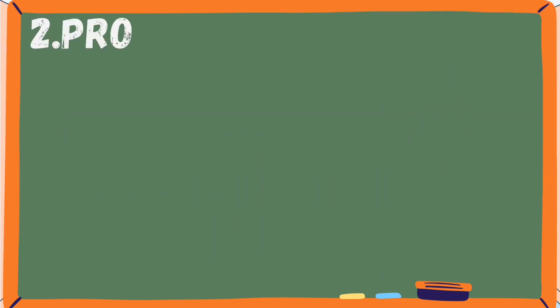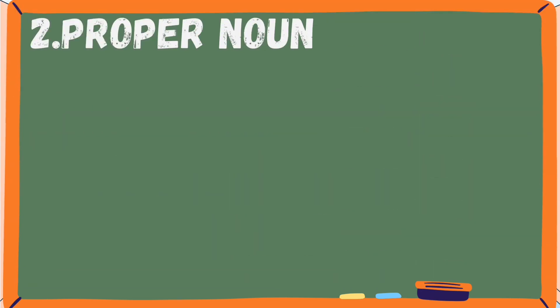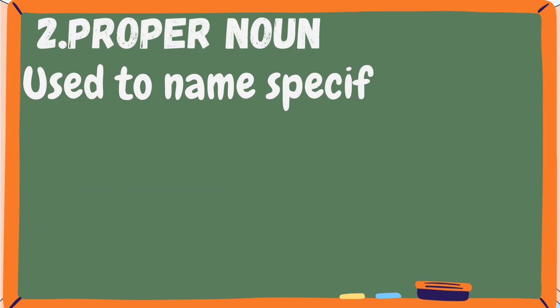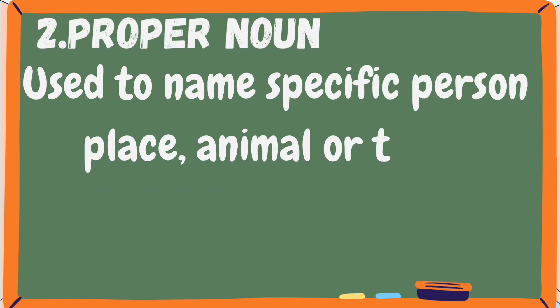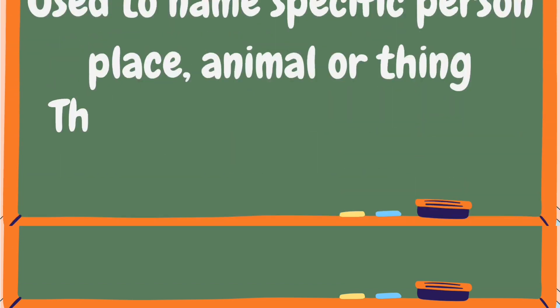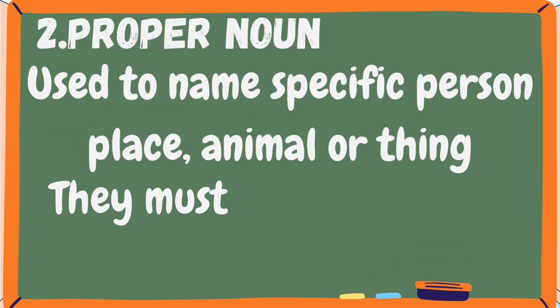Proper noun — used to name a specific person, place, animal, or thing. They must begin with a capital letter.